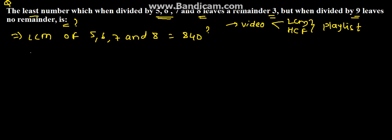Now, after finding the LCM, we can say that the required number is in the form 840K plus 3. Why 840K? Because 840 is the LCM of the numbers. And plus 3 because 3 is the remainder.